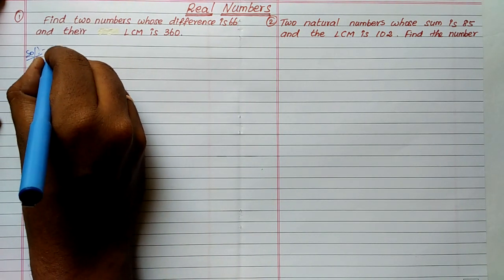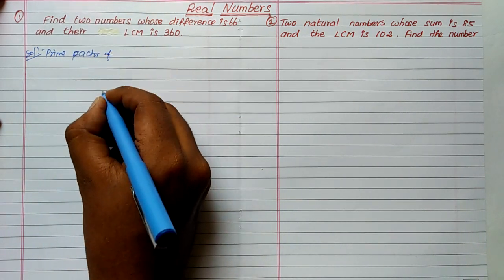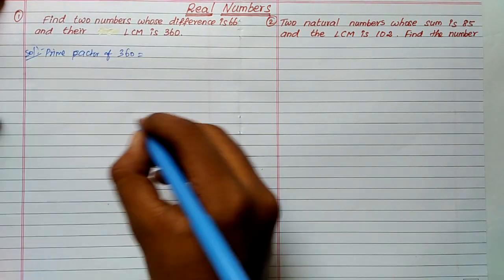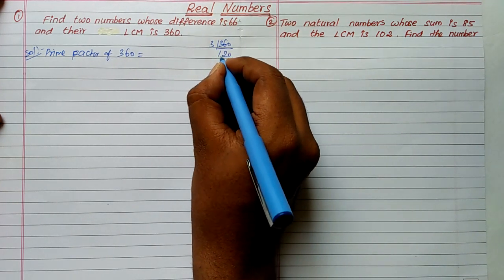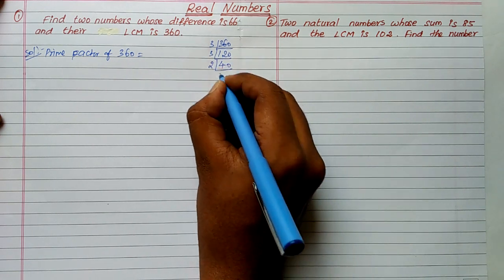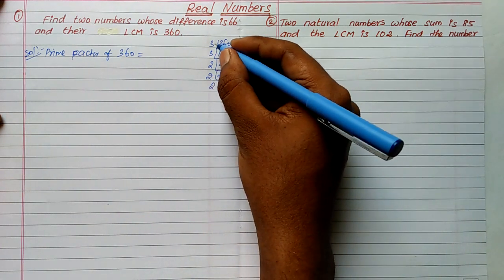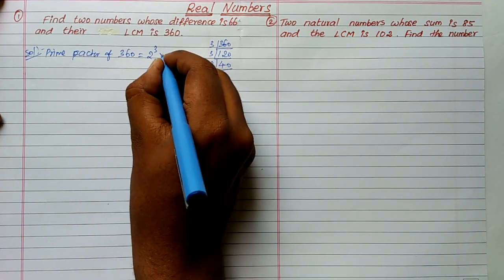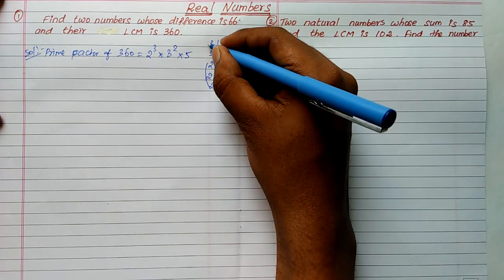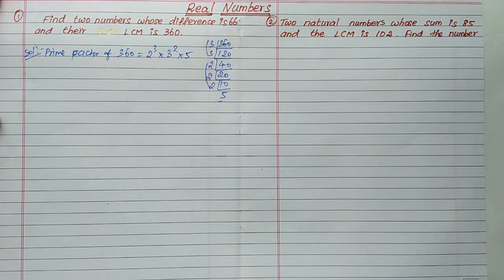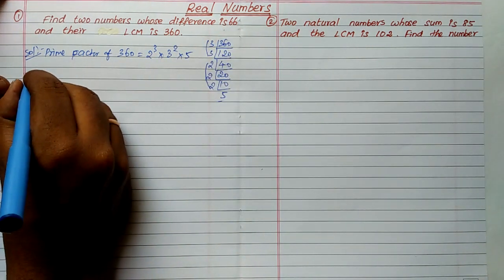First we will find the prime factors of the given LCM, which is 360. So 360: three goes in, two goes in — we get two to the power three, three to the power two, and five. So we can write 360 as 2³ × 3² × 5.